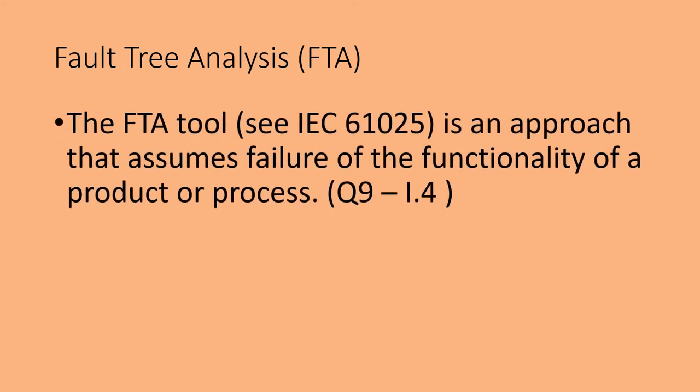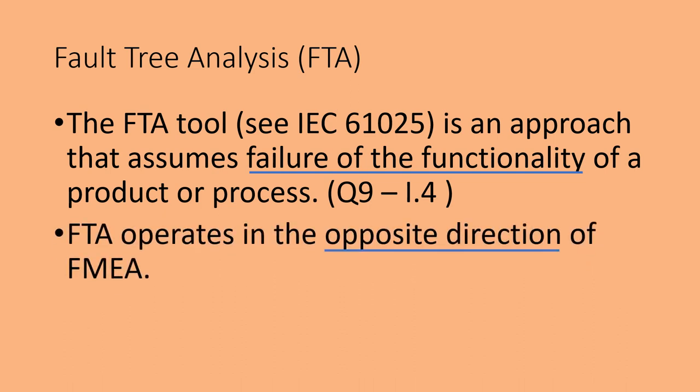Let us see how the FTA — that is the fault tree analysis tool — works. The FTA tool, referenced under IEC number 61025, is an approach that assumes failure of the functionality of a product or process. FTA operates in the opposite direction of FMEA. To understand easily, let us see an example: a car driving at very high speed is the failure mode that can cause an accident — that is the likely effect and risk. This is how FMEA works.